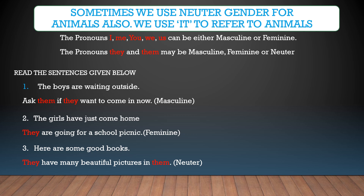So dear students, this is a short explanation on chapter 13 from the English grammar textbook, topic: gender. Kindly go through it once again and understand the three types of gender and the pronouns — where we use them and how we need to use them correctly. Thank you.